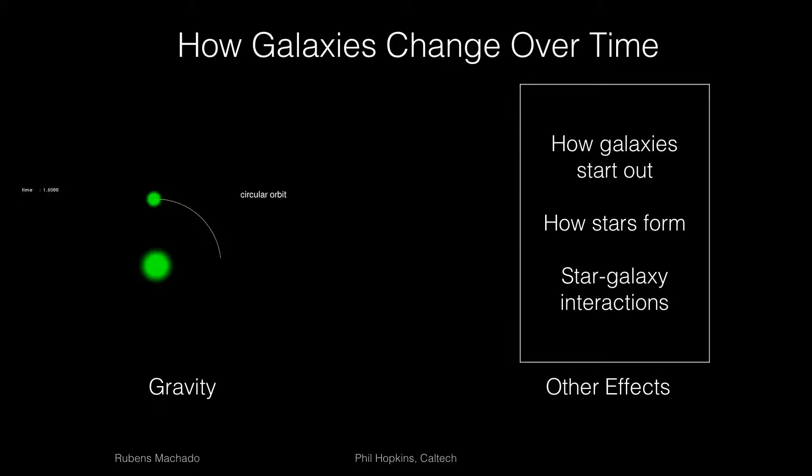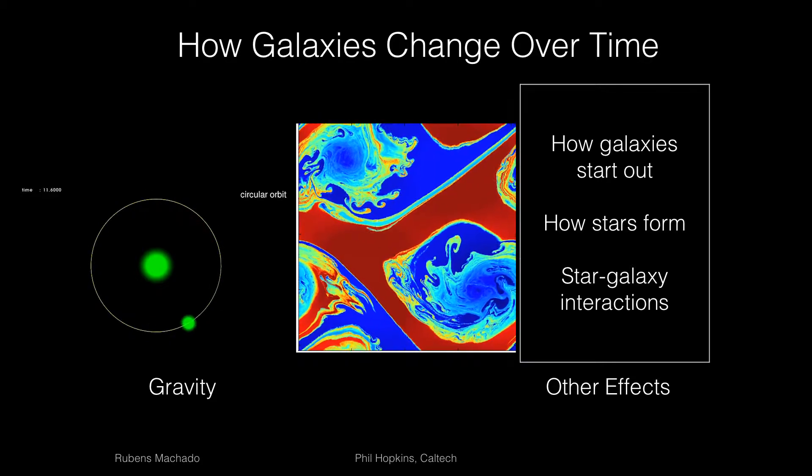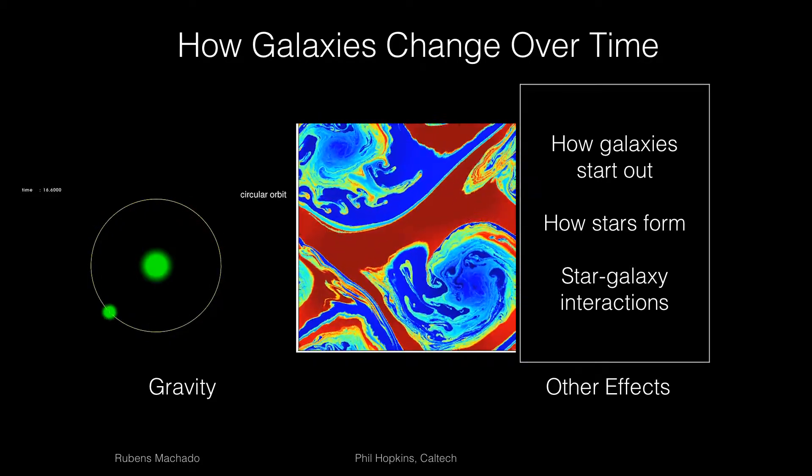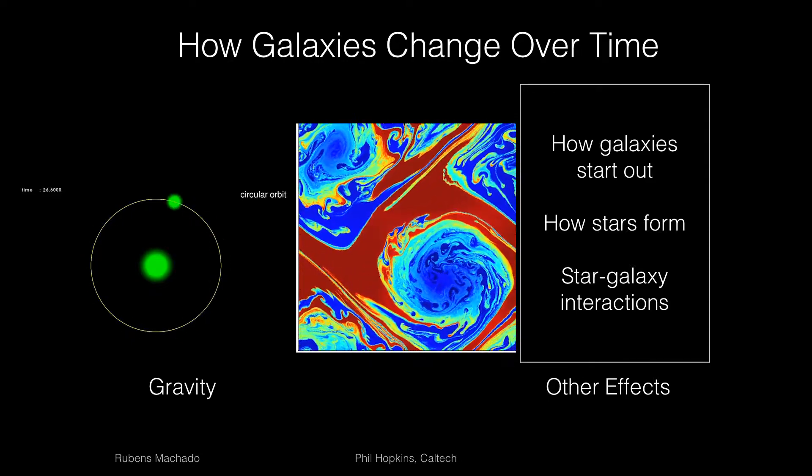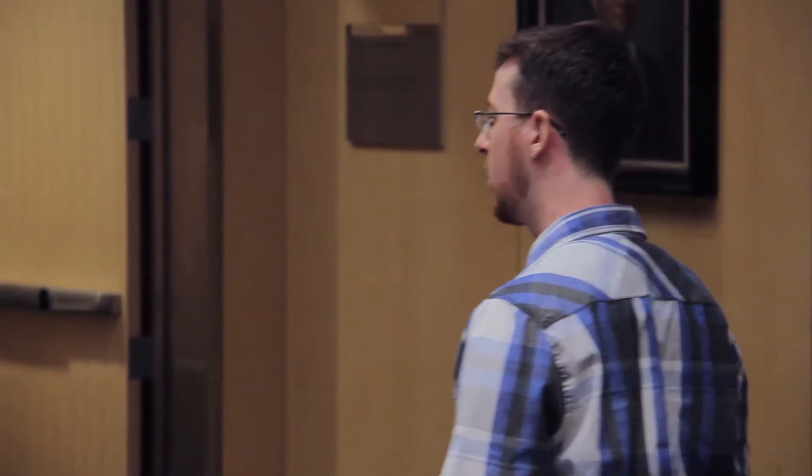How about how it changes over time? Well, for that, we need gravity. You also need how gas behaves. In other words, hydrodynamics—same stuff we use to figure out how fish swim. And you additionally need some other information, like how do galaxies start in the first place? How do stars form? What happens as stars grow older? That's how galaxies change over time.